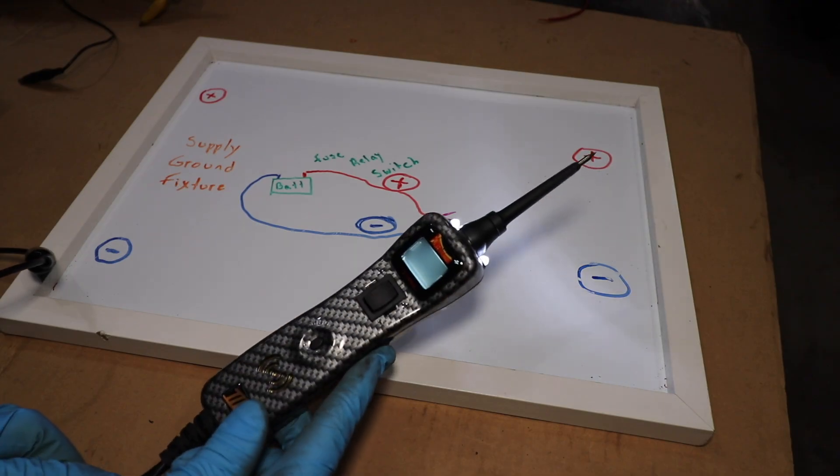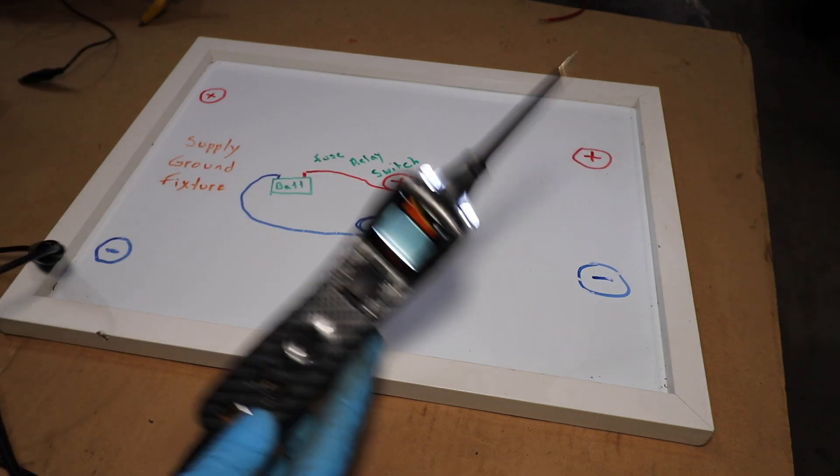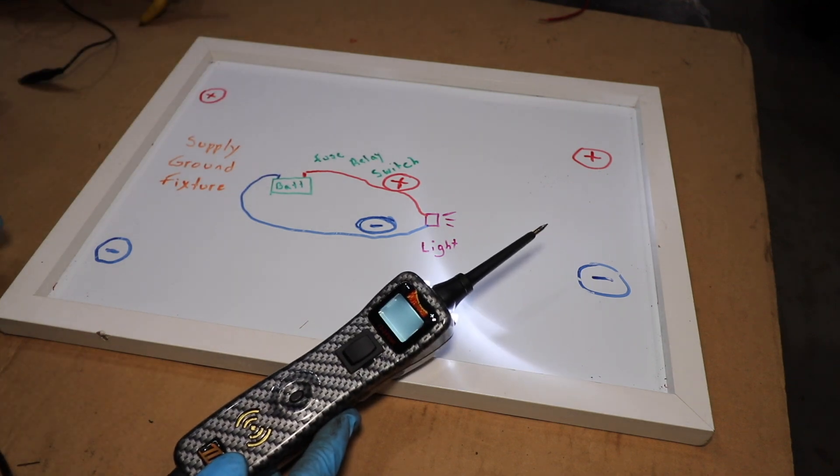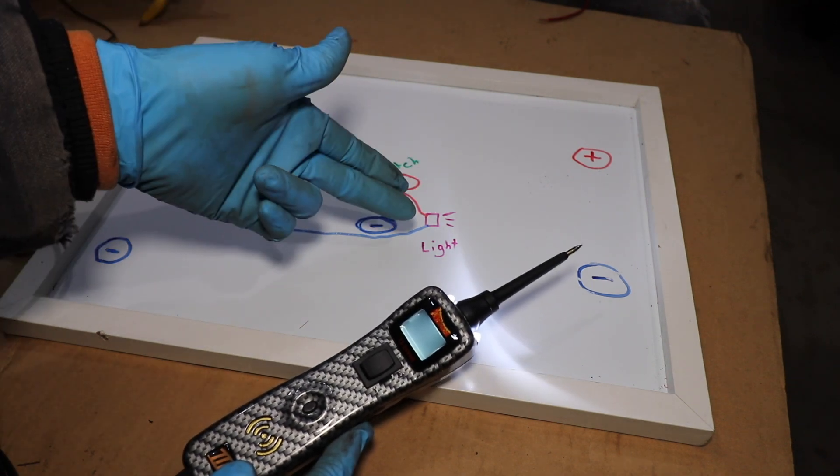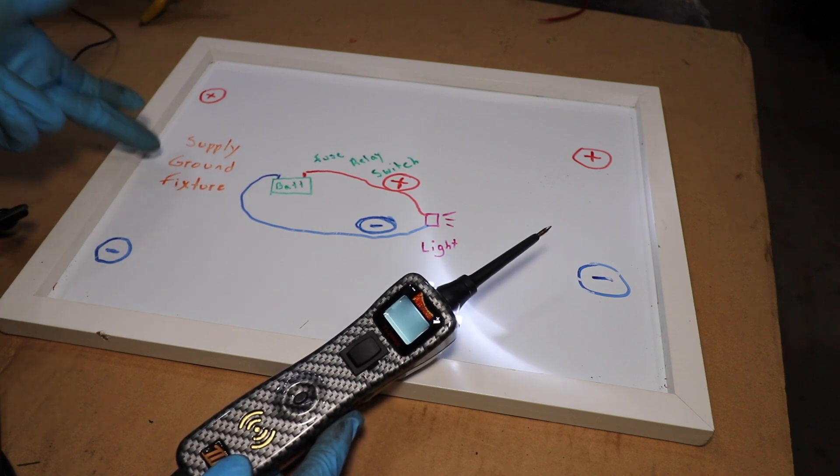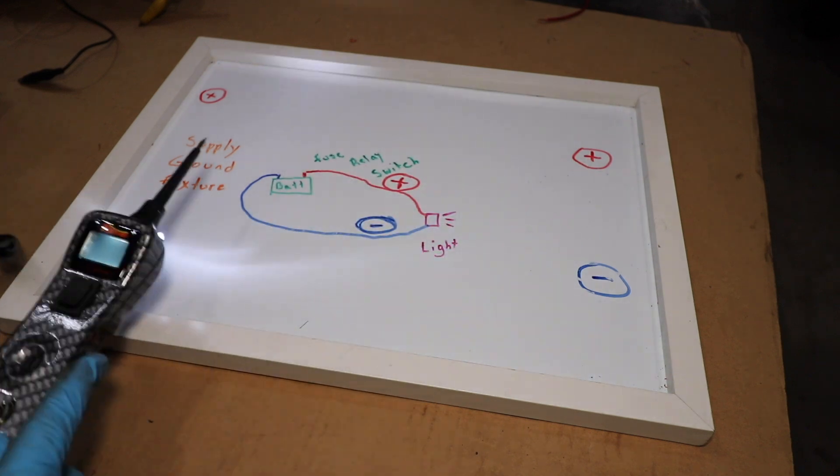So I think I've pretty well demonstrated that this is such a handy and versatile device. Totally blows the traditional test light out of the water. Again, when you're having a 12 volt electrical fault, just pick a point to start and then think to yourself, do I have an issue with the supply, ground, or fixture itself. With the power probe, it should make it very easy to determine where your issue lies.